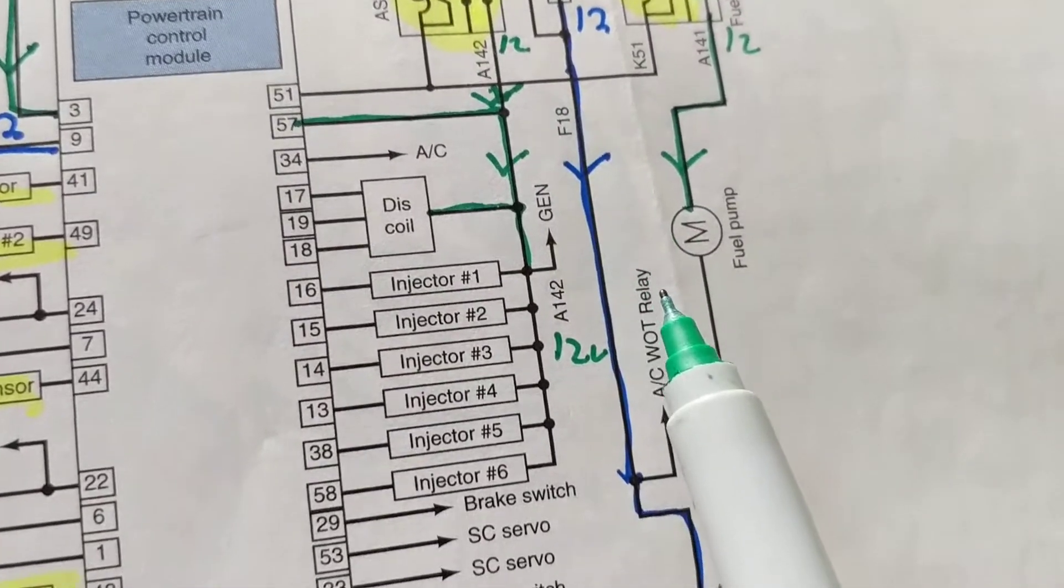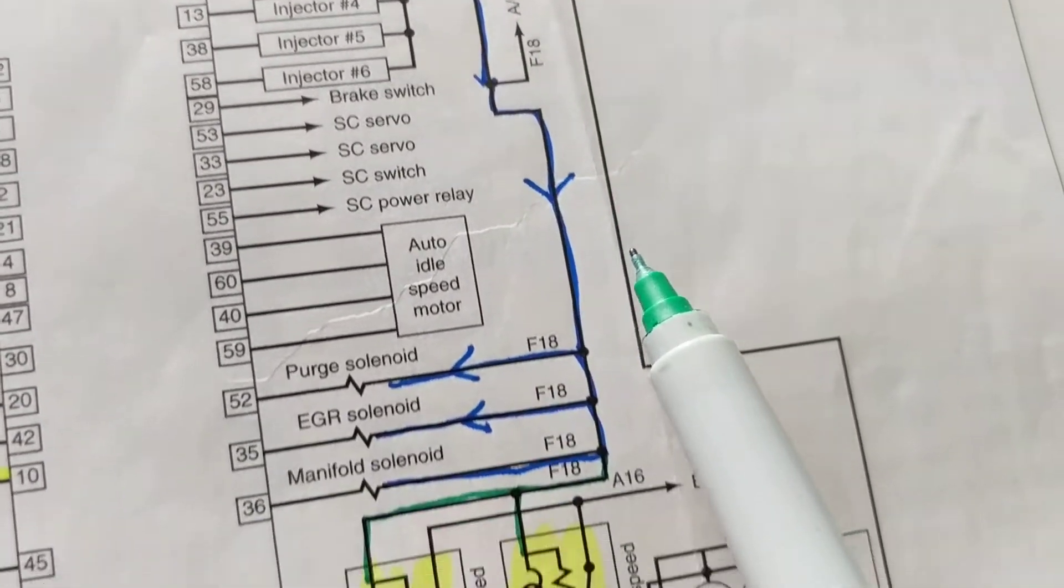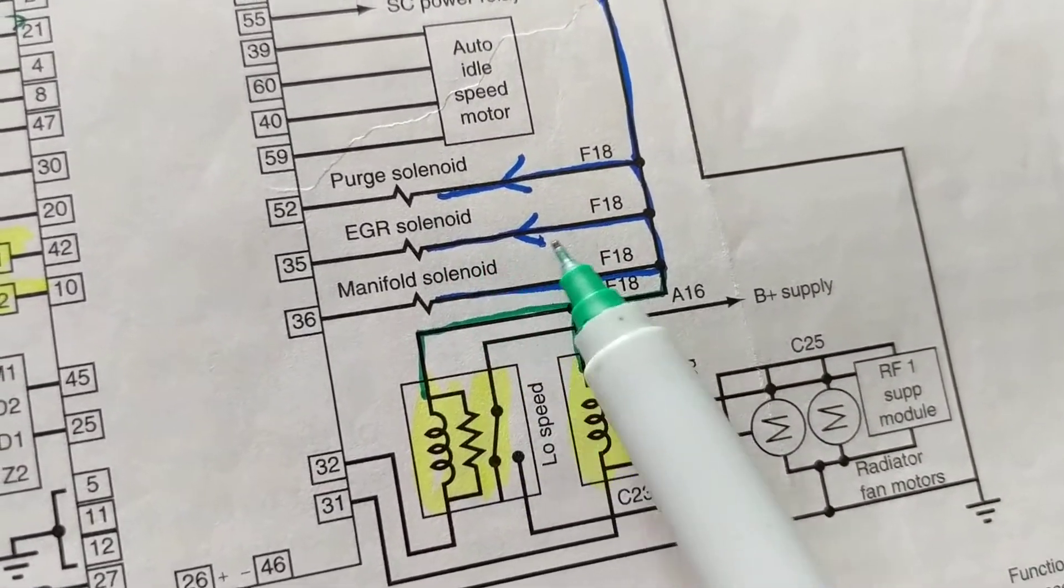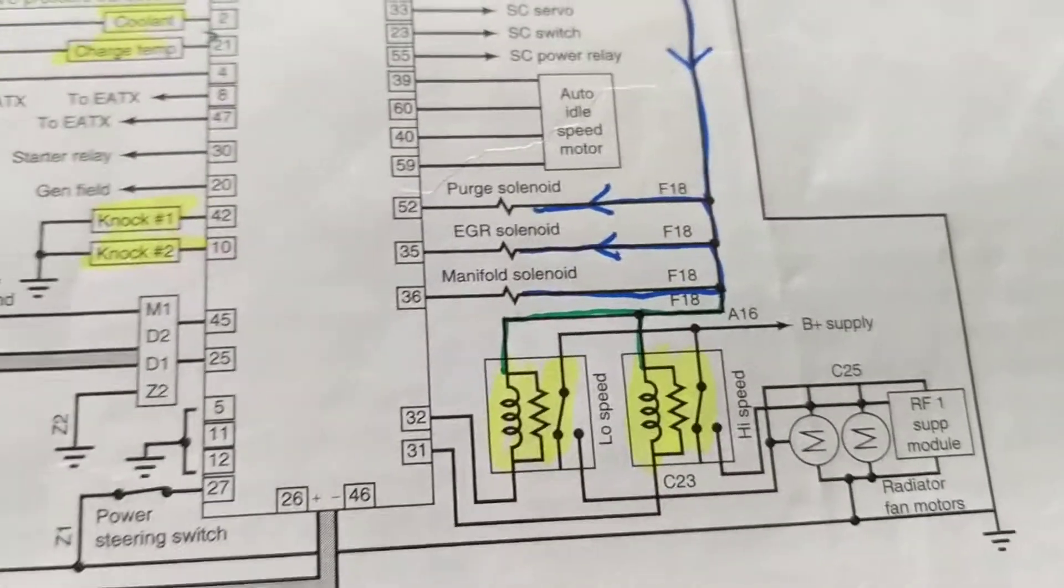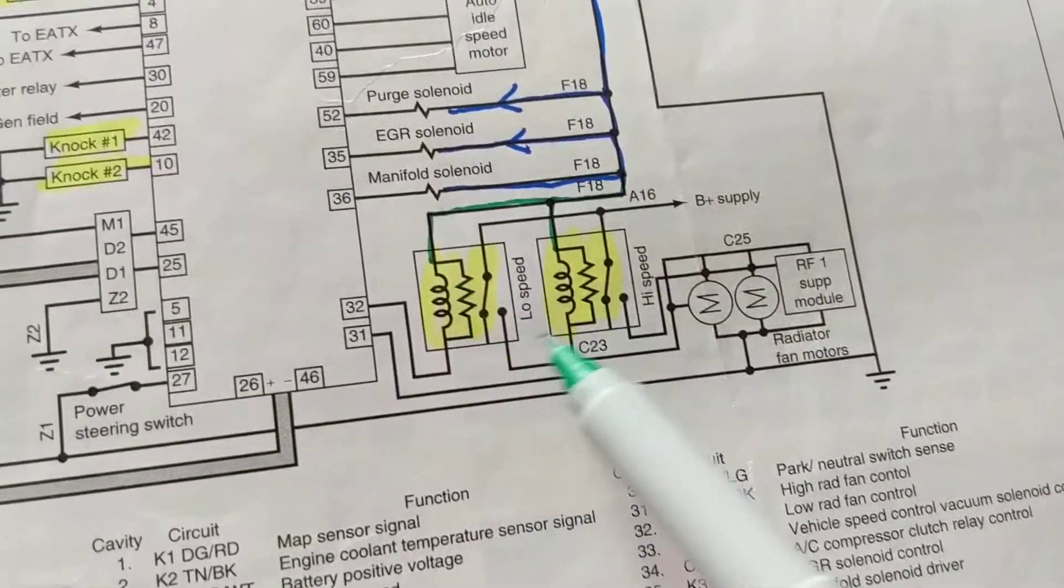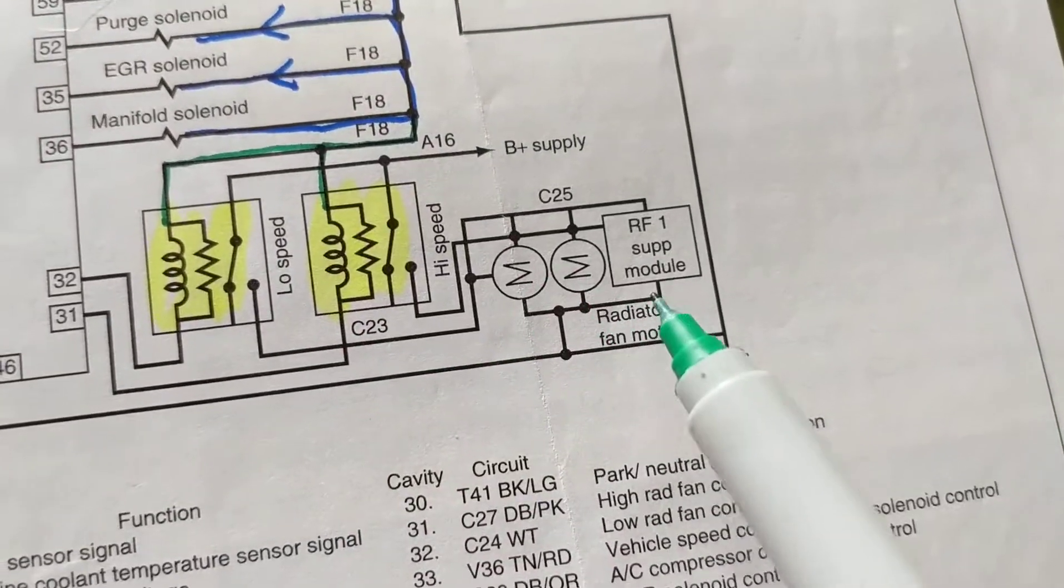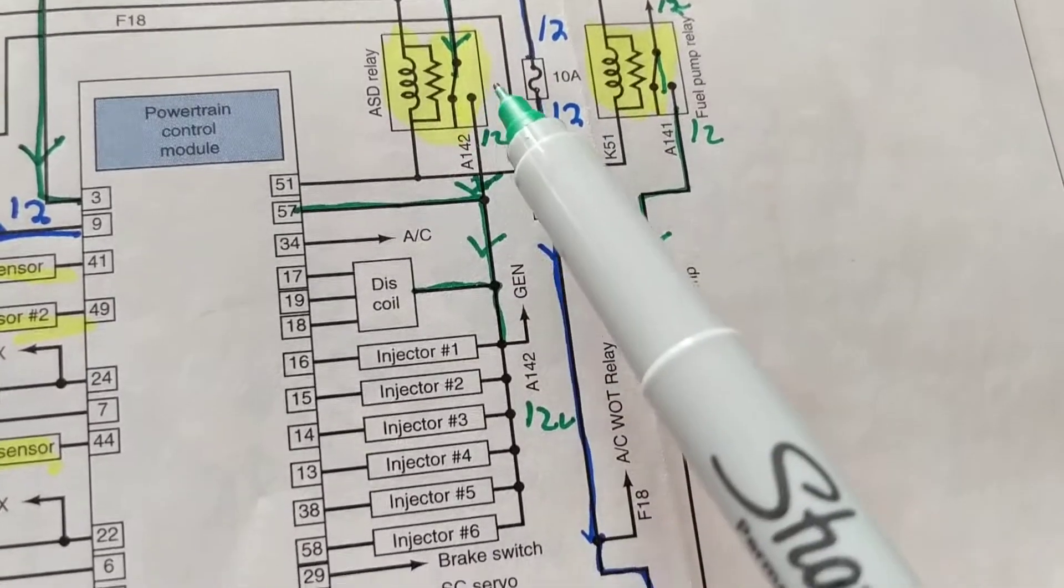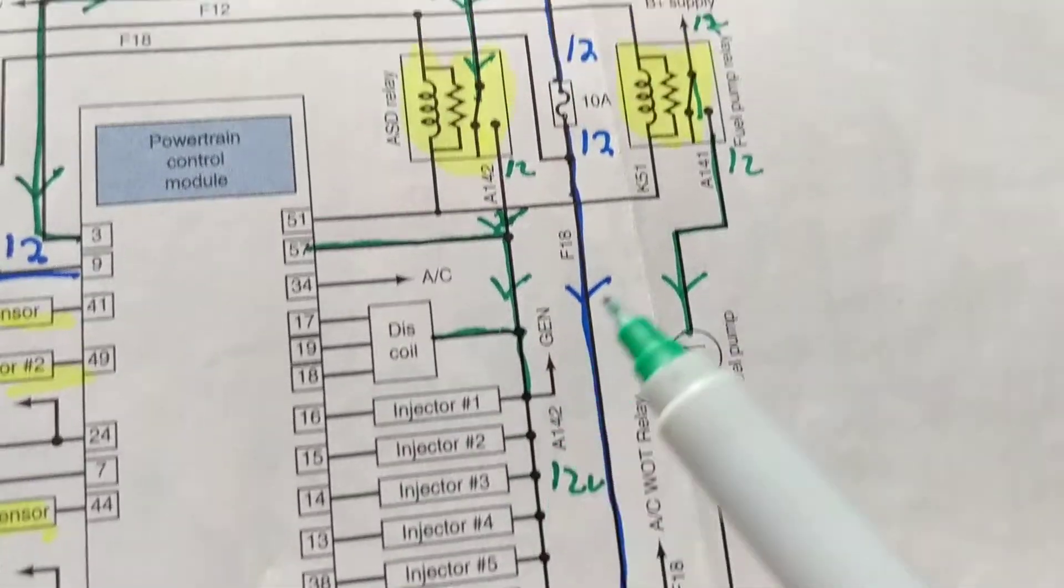Then it goes to more areas. So another fuse, 10 amps, still 12 volts, goes over here and it feeds more solenoids for EGR. So anyway, these are relays turning on the motors, the fan motors, the radiator fan motors. These are the relays turning on these injectors which we'll get to.